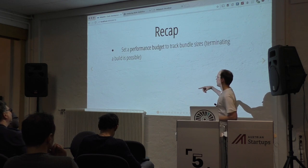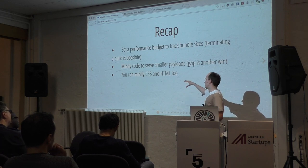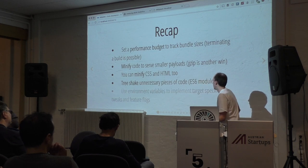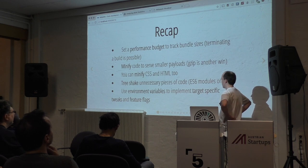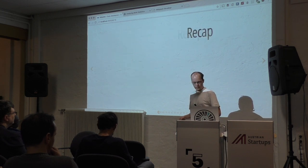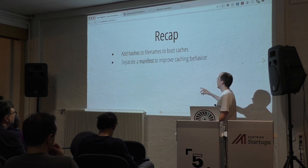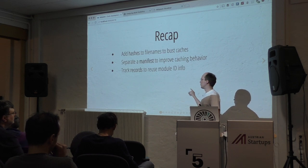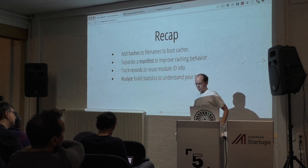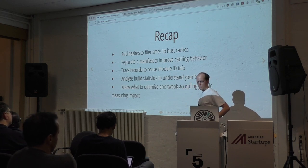To recap: to get started, set a performance budget so you have limits. Then minify — do it for CSS and HTML as well. You can use tree shaking — it's a hyped feature but it's real. You can do environment tricks to choose what code goes to which target. When it comes to caching, use hashes in file names, handle the manifest problem we talked about, and use records if you use code splitting. Analysis is the key to everything — if you know what's going on in your build, you can actually optimize it. You have to know a little bit about Webpack before you can optimize its behavior.